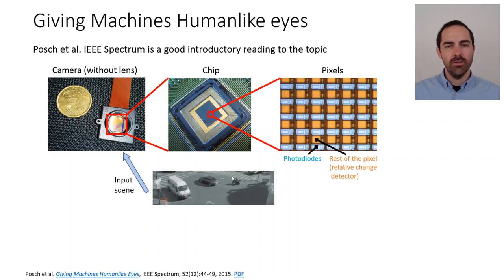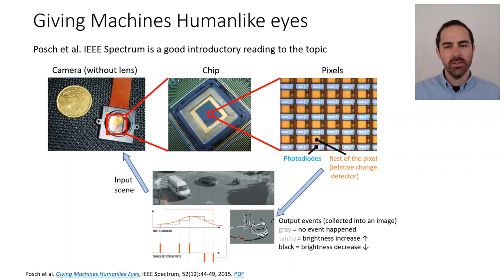If we input the camera as viewing a scene, then the output we see in the pixels is something like this. Here in orange, what is represented is the light that arrives at a single pixel. This orange signal is converted into a sequence or stream of events — some of them are positive, some of them are negative. The positive indicate that there was a brightness increase, and the negative indicate there was a brightness decrease.